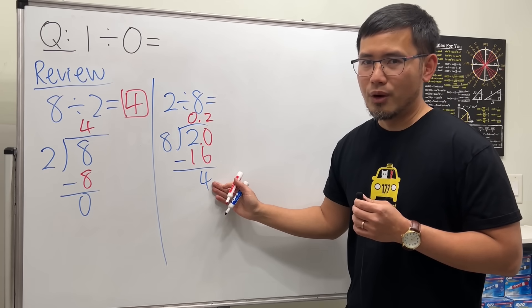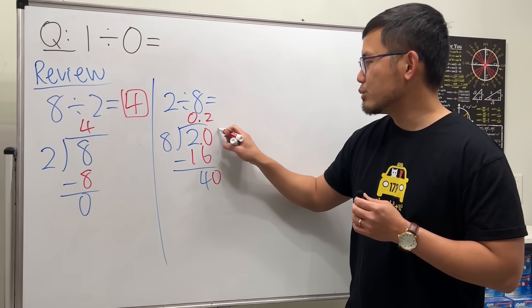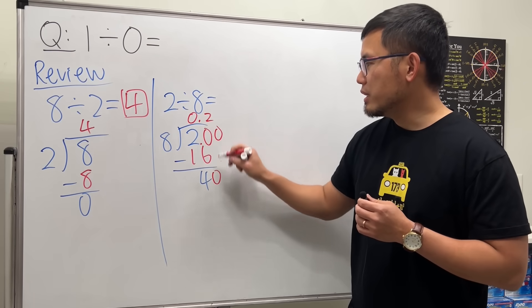Let's go ahead and put down another number, right? Because this is the same as 2.00. You can put this 0 down. And then 8 goes into 40 5 times.